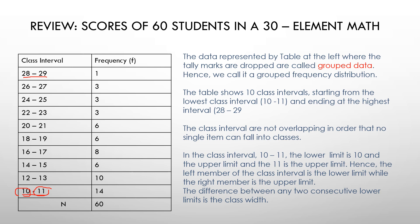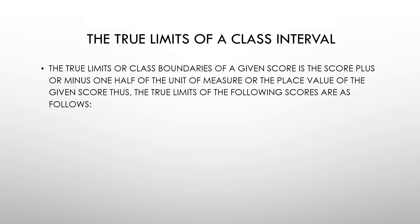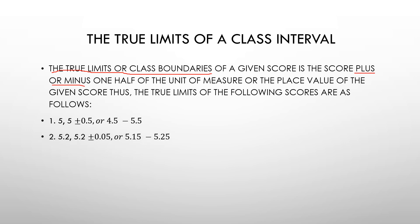The two limits — or class boundaries — are found by taking a score plus or minus one half of the unit of measure of the place value of the given score. So all you have to do is subtract 0.5 from the lower limit and add 0.5 to the upper limit. For example, 5 becomes the interval 4.5 to 5.5.